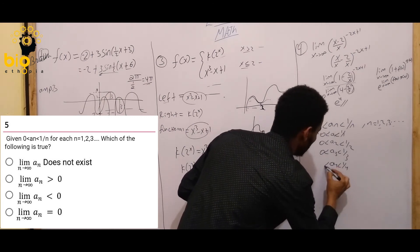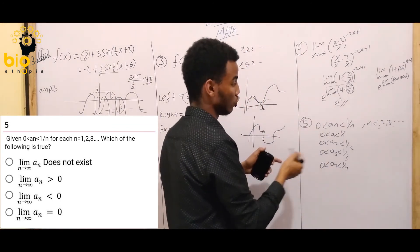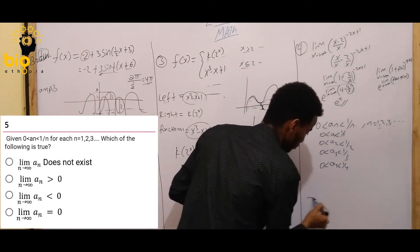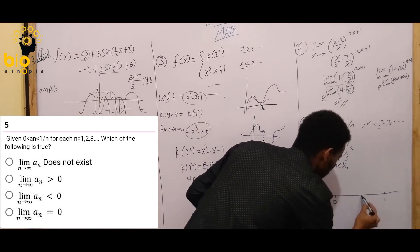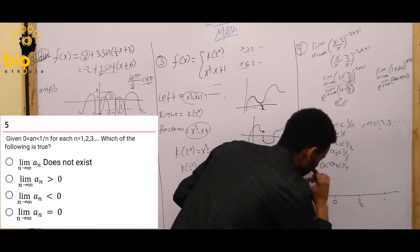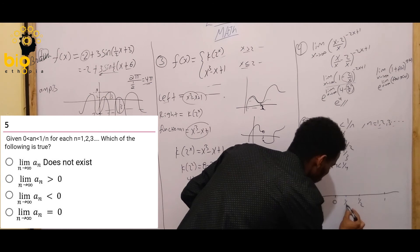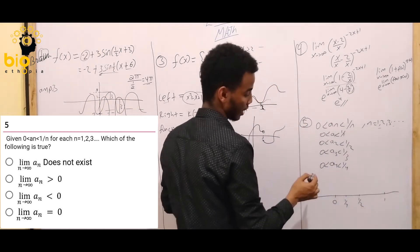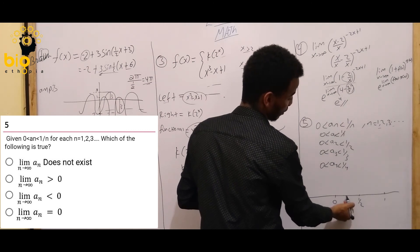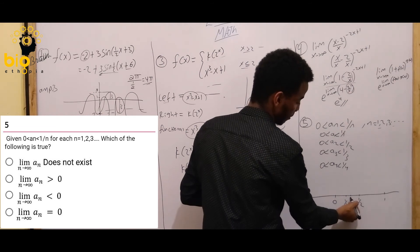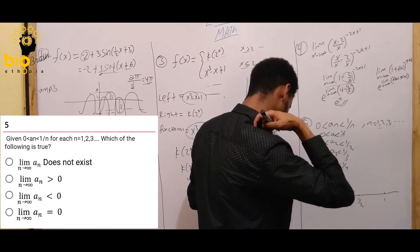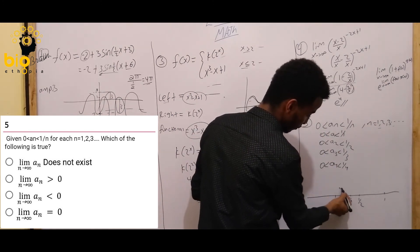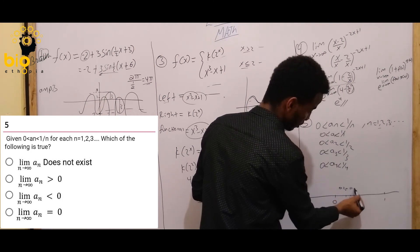a₁ is 1 over 4, a₁ over 4 — approximately 0. The sequence: 1 over 2 is 0.5, 1 over 4 is 0.25, 1 over 3 is 0.33. So the sequence values are 1 over 2, then 1 over 4, then 1 over 3.